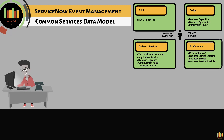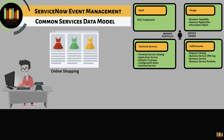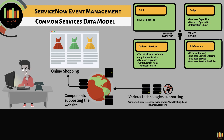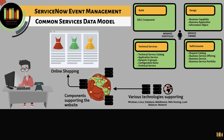To make it simpler, consider a web application where users can perform online shopping. Business service is the layer where customers navigate through the web interface to select and purchase. Application service represents the active instance of the application at the backend supporting the web interface and transactions. Technical services are the various technological services leveraged to host this instance of the application — it can be a Windows service, network service, database service, and so on.